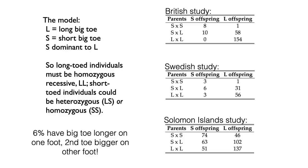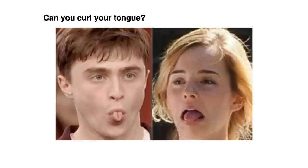Furthermore, that initial study found that 6% of the people had the big toe longer on one foot and the second toe bigger on the other foot. Presumably, your two feet are genetically identical — the cells are genetically identical in your two feet. So how could this happen? It's just saying no — your simple Mendelian assumption is probably wrong. It's more complex than you thought.